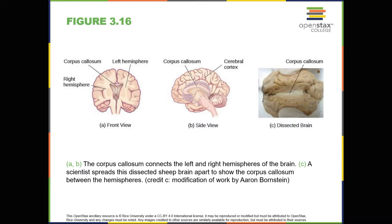Much of what we know about the functions of different areas of the brain comes from studying changes in the behavior and ability of individuals who have suffered damage to the brain. For example, researchers study the behavioral changes caused by strokes to learn about the functions of specific brain areas. A stroke, caused by an interruption of blood flow to a region in the brain, causes a loss of brain function in that affected area. The damage can be in a small area, giving researchers the opportunity to link any resulting behavioral changes to that specific area. The types of deficits displayed after a stroke will be largely dependent on where in the brain the damage occurred.